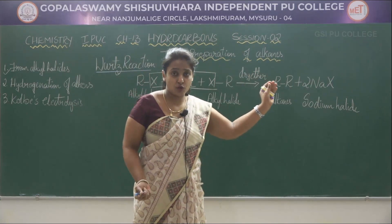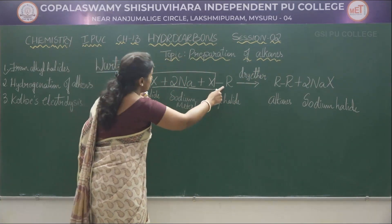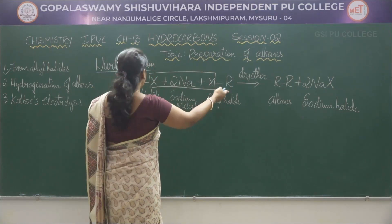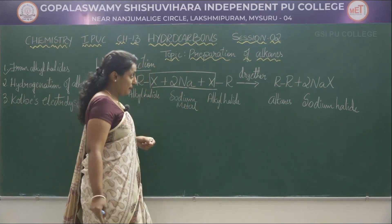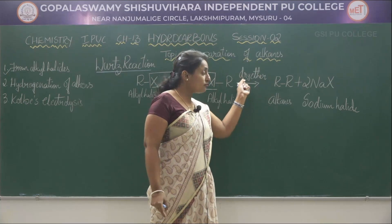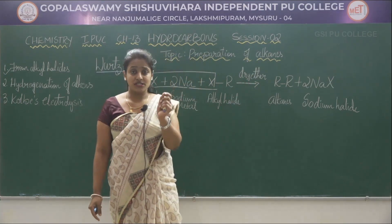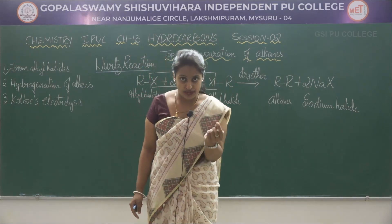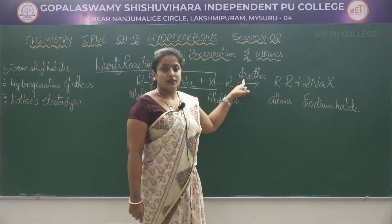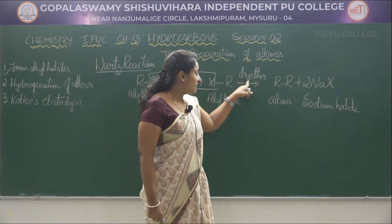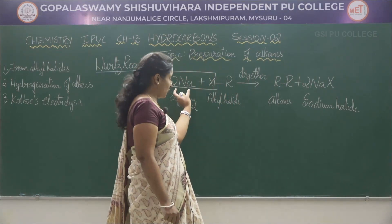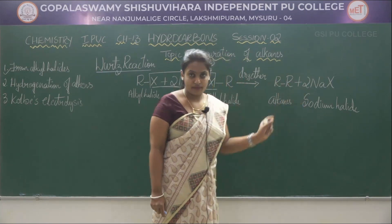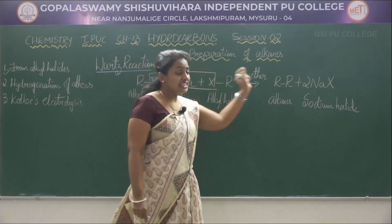What does Wurtz's reaction mean? Here, 2 moles of alkyl halides react with 2 moles of sodium metal in the presence of dry ether. Dry ether is used as the organic solvent, which is known as an aprotic solvent. The two moles of alkyl halides reacting with sodium metal in the presence of dry ether give higher member alkanes with sodium halide as the byproduct.